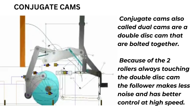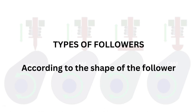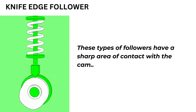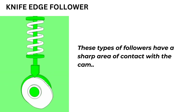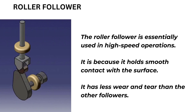Types of followers according to the shapes of followers. Knife edge follower: these types of followers have a sharp area of contact with the cam. Roller follower: the roller follower is essentially used in high speed operations, because it holds smooth contact with the surface. It has less wear and tear than the other followers.